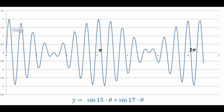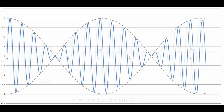Here's the same graph with dotted envelope lines around the sine wave. You can see that the envelope has a frequency of about two, which is indicative of the up and down of the volume of the addition of the two sine waves.